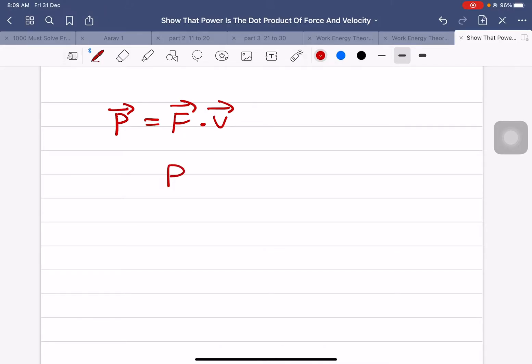We know that power is the rate of doing work, or instantaneous power is equal to dW divided by dt. So what is dW?